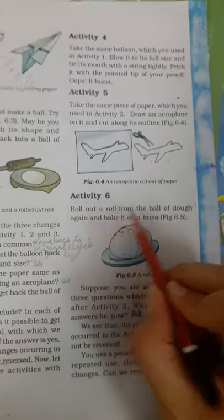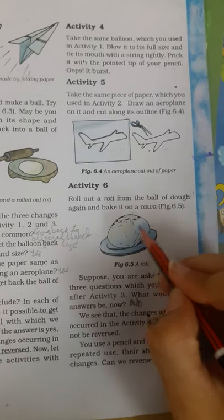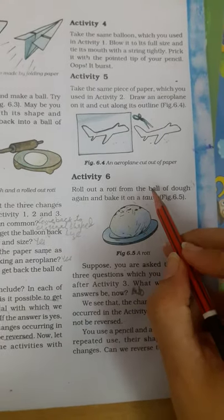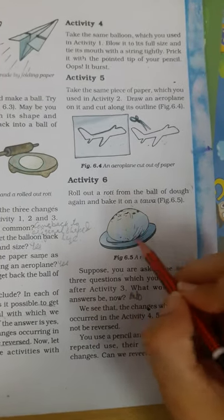Now roll out a chapati from the ball of dough - aate se chapati banayi and bake it on tawa - usko paka liya. Can this change be reversed? Can we get back the ball of dough from this chapati?